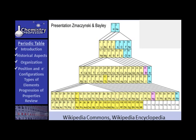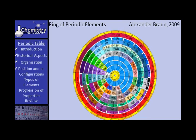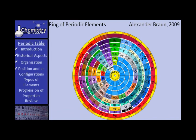Now this first one that I'm showing you is in the shape of a pyramid. And as you go down the periods and you see the periods becoming increasingly long, you can understand why that would fit nicely into the pyramid shape. Here's another one called the Ring of Periodic Tables. This was developed by Alexander Braun, an artist in Toronto in 2009. That's kind of interesting, isn't it?